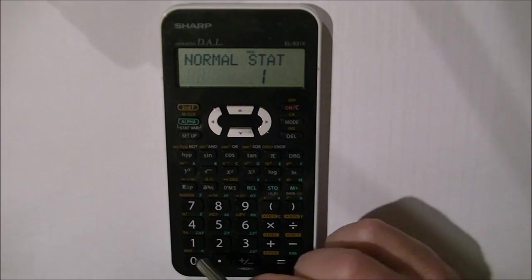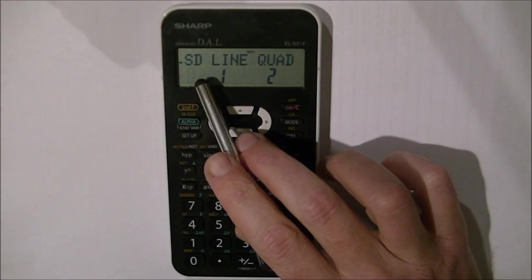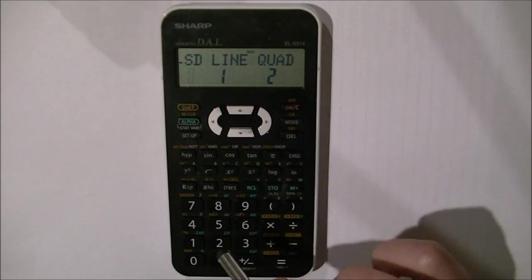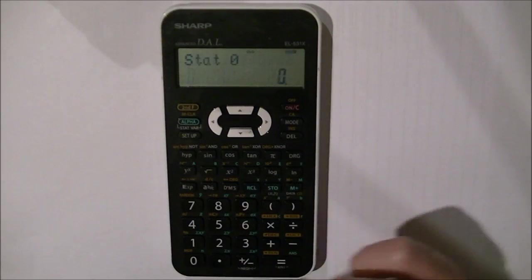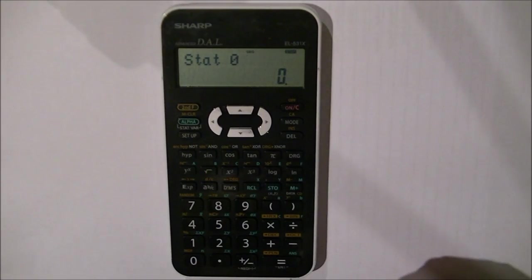If I want to go to statistics mode, I press the one button and I'm given options of SD (standard deviation), linear, and quadratic. I'm going to go to the standard deviation mode and I see stat 0. So I'm now in statistics mode.